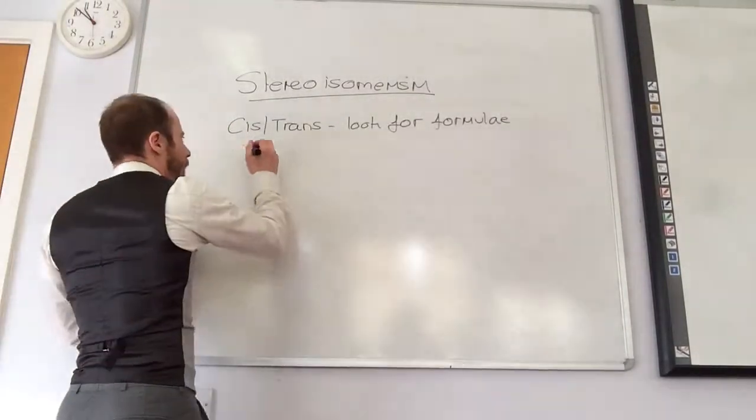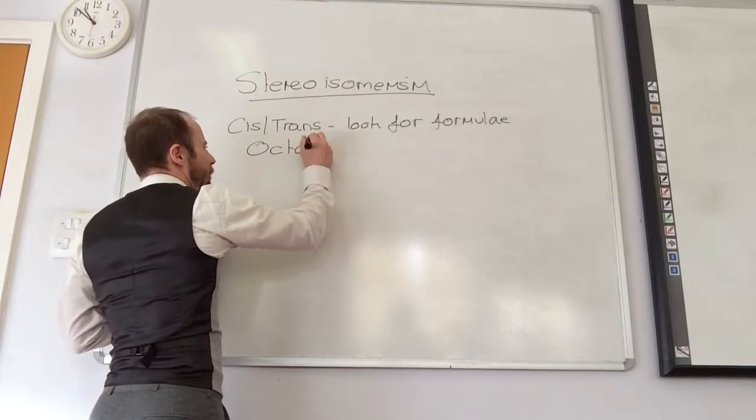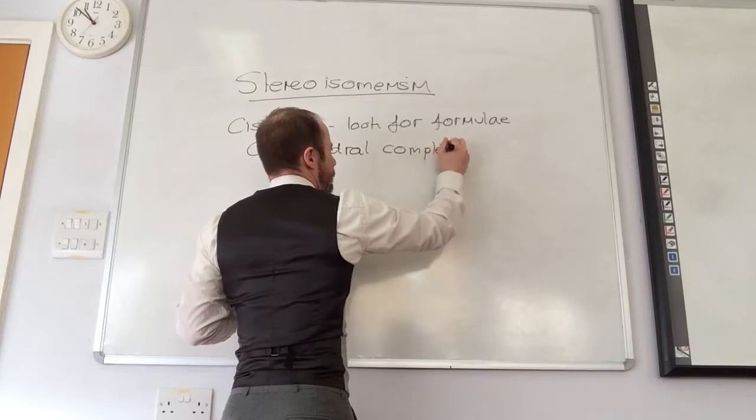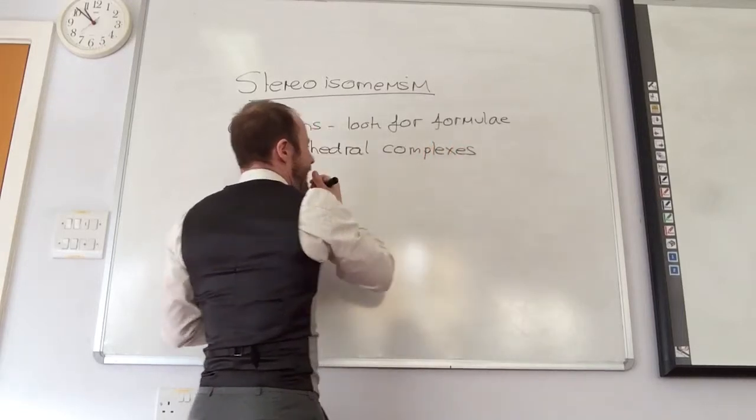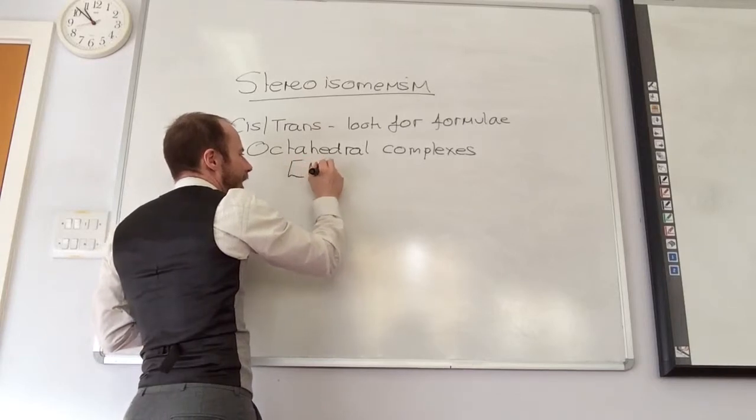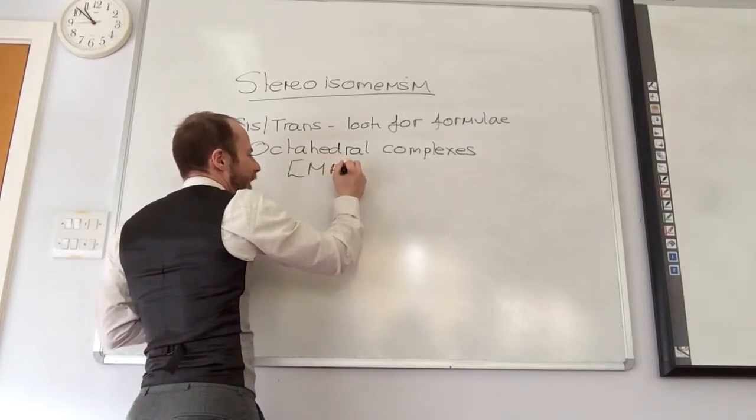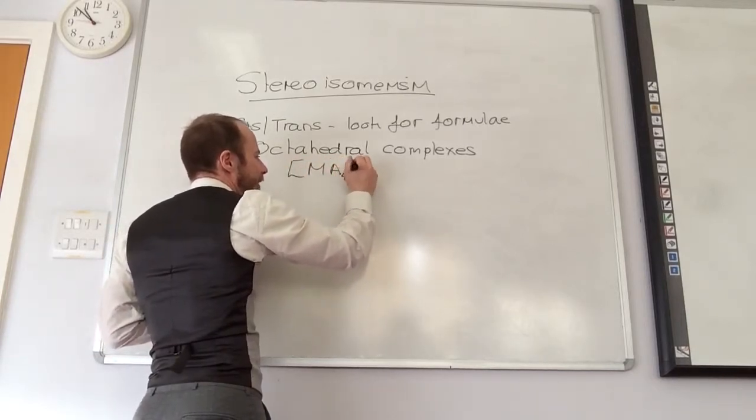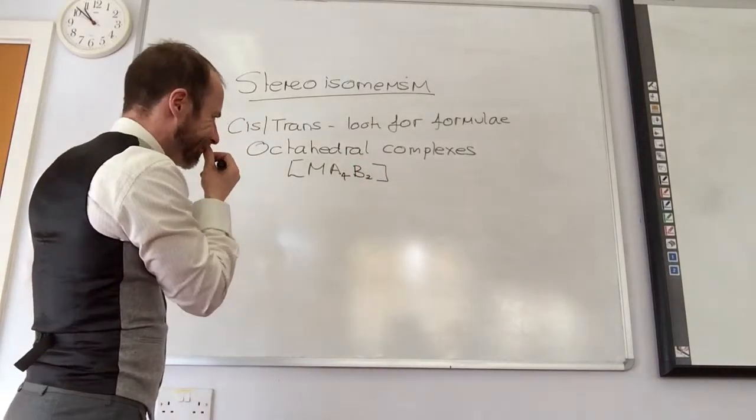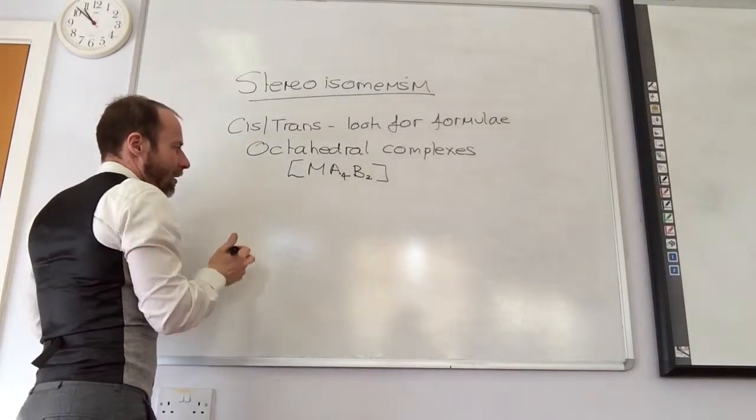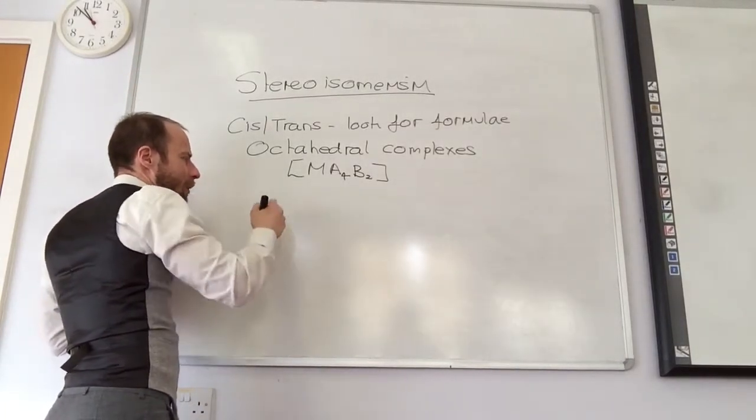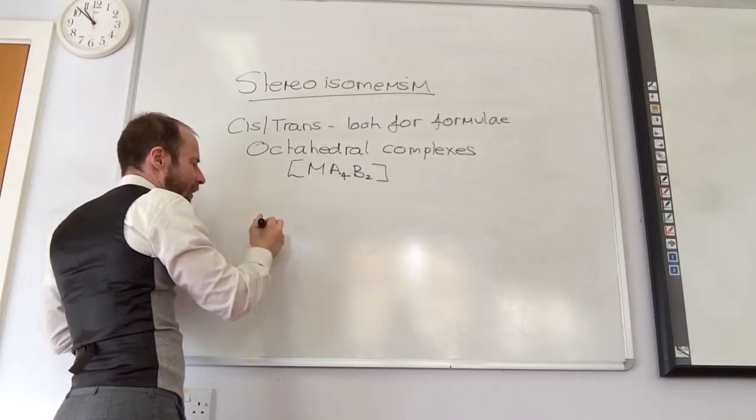So the other one to look for is octahedral complexes. So if you've got monodentate ligands, so if you have this arrangement M with, say, four A's and two B's like that, you can arrange them with the B's opposite each other or next to each other.